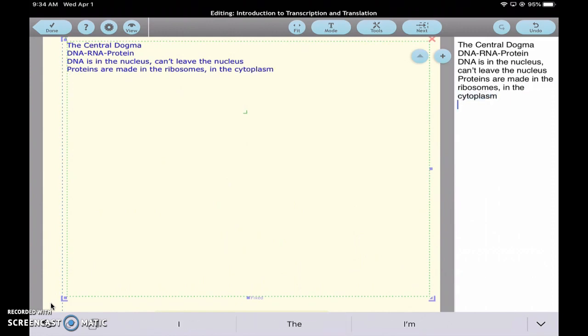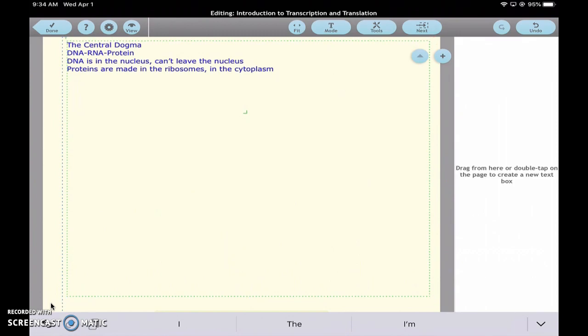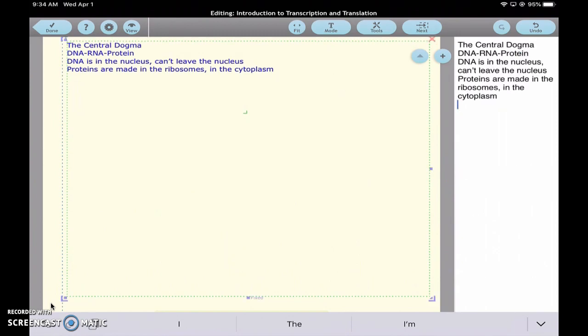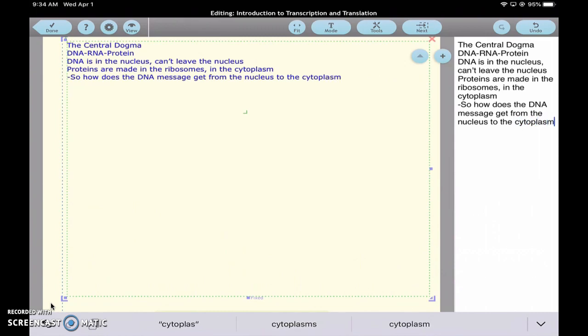So here's a question: How does the DNA message get from the nucleus to the cytoplasm?